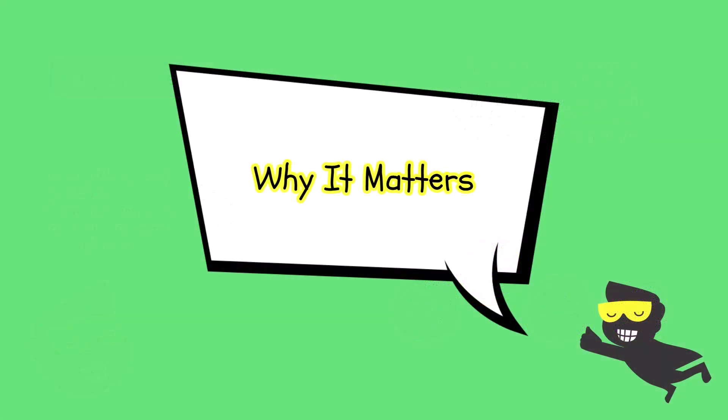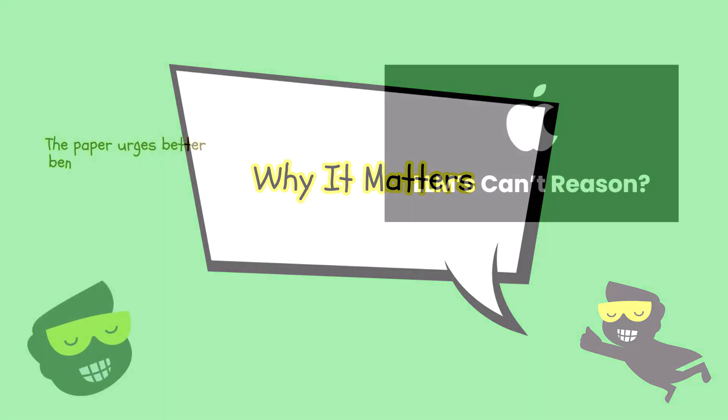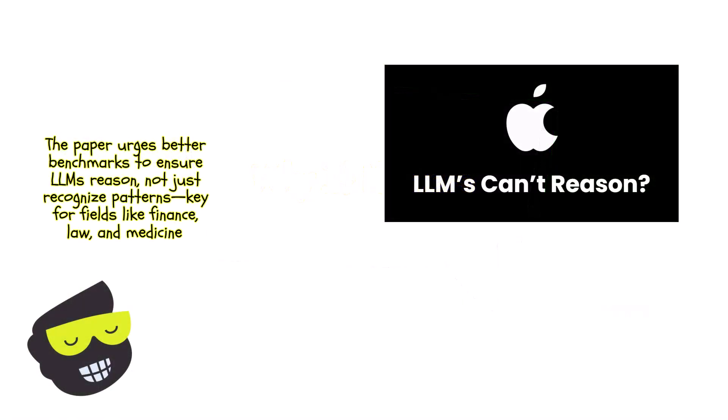The bottom line is, why does this matter? What the paper is doing is encouraging stronger benchmarks, not just for bragging rights, but to push us toward building LLMs that actually reason. If the model picks up tokens that look relevant but never learns to ignore distractions, it's not truly reasoning. This can be crucial if we ever rely on LLMs for any scenario with complicated or messy instructions like finance, law, or medical advice.